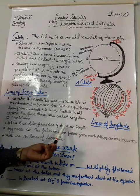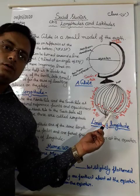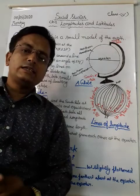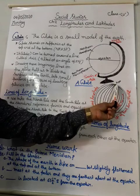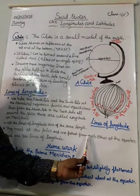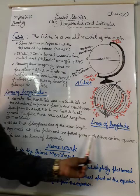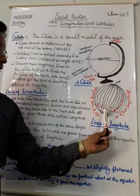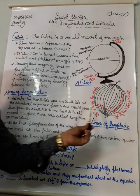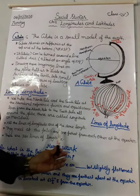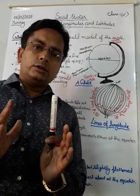This line is drawn on the whole globe. All the lines of longitude are the same length — all lines are equal in size. They meet at the poles, both North Pole and South Pole, and are furthest from each other at the equator.